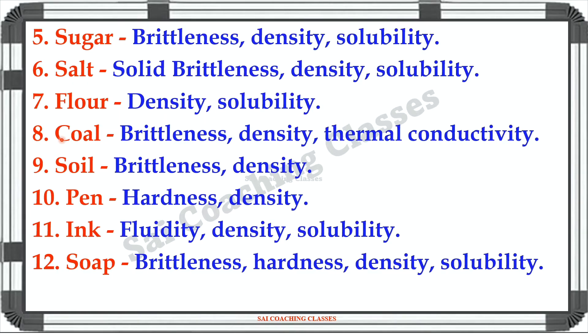Eighth one: Coal - Brittleness, Density, Thermal conductivity. Ninth one: Soil - Brittleness, Density.